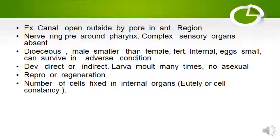These are dioecious; male is smaller than female. Fertilization is internal. Eggs are small and can survive in adverse environmental conditions. Development is direct or indirect. Larva moults many times. No asexual reproduction is present and regeneration is also absent. The number of cells in an animal are fixed — this is known as eutely or cell constancy.